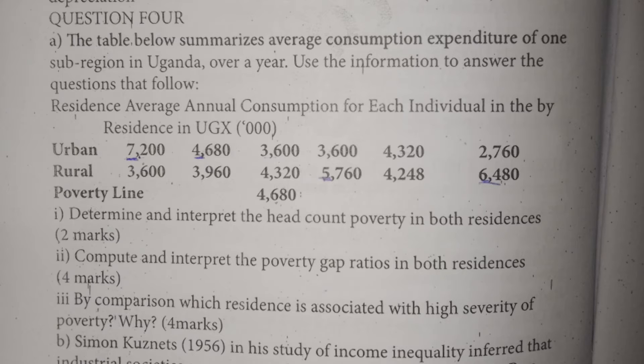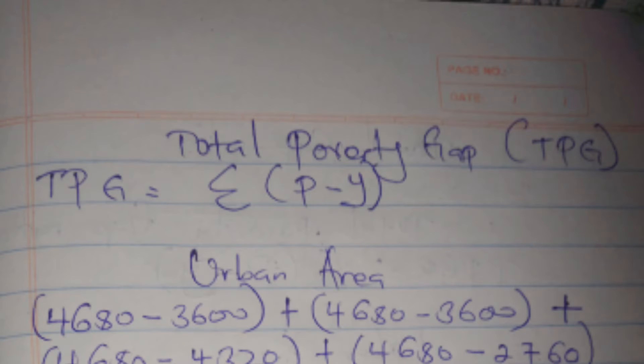So we are going to see the difference. The formula for calculating the total poverty gap is just summation of P minus Y, whereby P is the poverty line, then Y is the individual income.